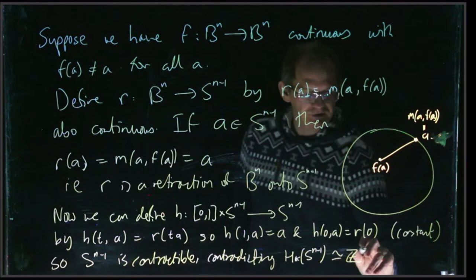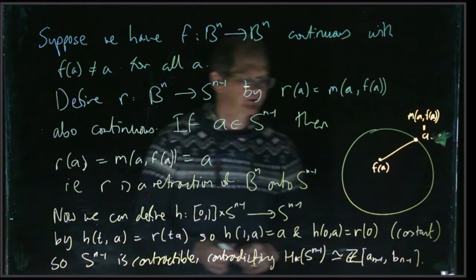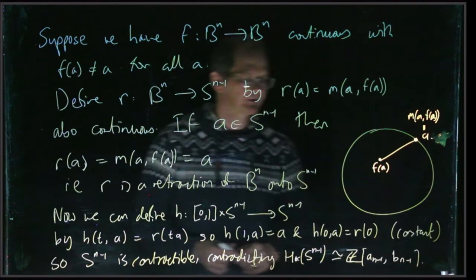And this contradicts what we know about the homology of spheres. If it was contractible, then it would have the same homology as a point, just a single Z in degree zero. But we know that in fact the homology of S^(n-1) has two copies of Z. So that's a contradiction. It shows that this map f here can't exist. And therefore every map, every continuous self map of B^n actually has a fixed point, which is Brouwer's theorem.